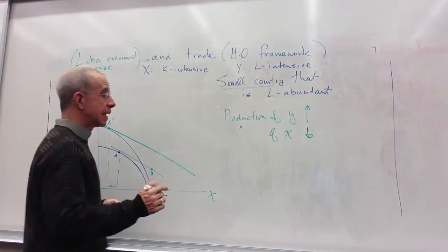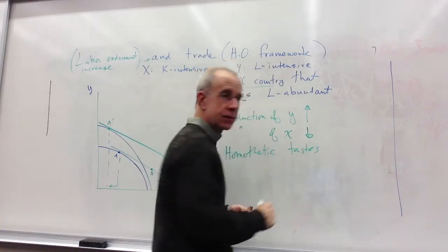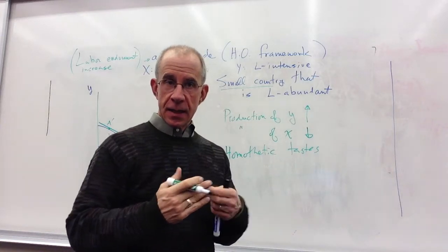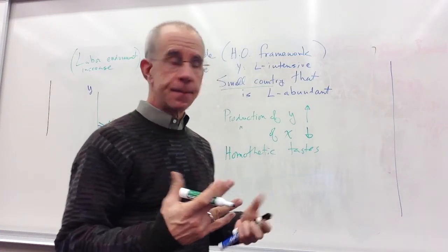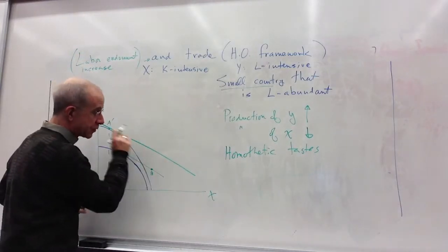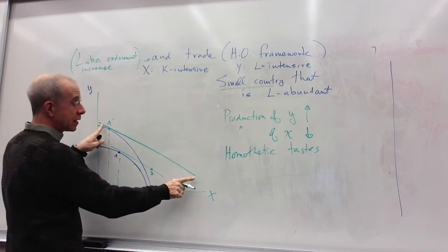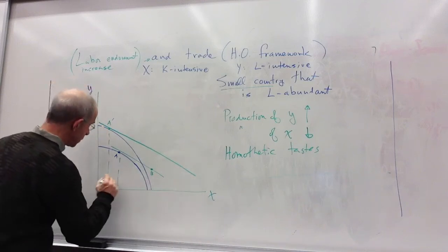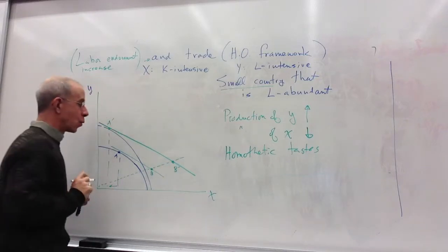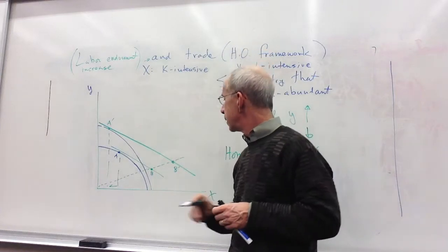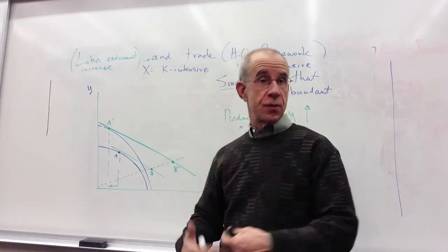So now let's take a look at the outcome. We continue to assume we've got homothetic tastes, the standard Heckscher-Ohlin assumption, and that means that if you keep relative prices fixed and you increase income, that the combinations of the two goods will remain the same. So we've got these two green lines, which are the national income before the labor endowment increase and the national income after the labor endowment increase, and the homothetic tastes mean that we're going to end up consuming at point B-prime. That's an increase in income, unchanged prices, you expand the consumption of both goods.